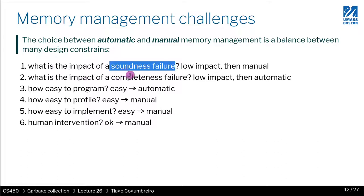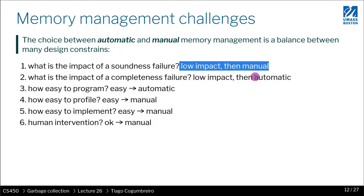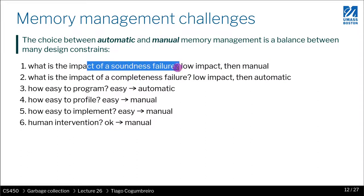What is the impact of a soundness failure? When do we care about soundness? Soundness has a low impact if you don't really care about making a mistake — for instance, claiming a certain piece of memory was not allocated when some other code might still be using it, which could lead to a crash. If that is not a problem, then manual memory management could be a good choice. With manual memory management, the programmer has to figure out whether to call free or not. If you make any mistakes, then you have a soundness failure.